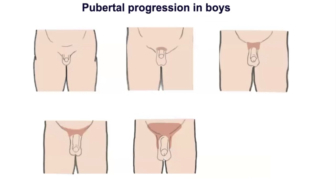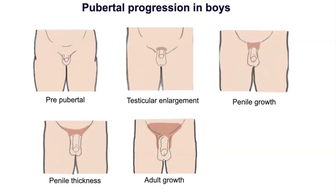Pubertal development in boys involves testicular enlargement, pubic and penile hair growth, growth spurt, and bone mineralization. Enlargement of the testes to 4 mL marks the onset of puberty in males. Enlargement to 10 mL indicates the growth spurt, while enlargement to 20 mL indicates advanced puberty and is associated with voice change.